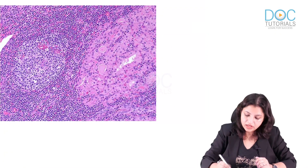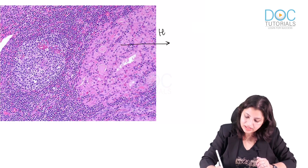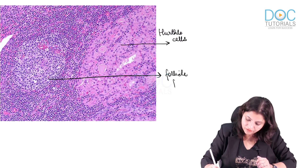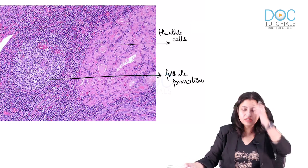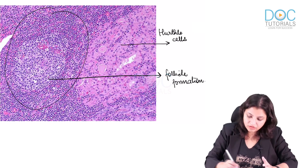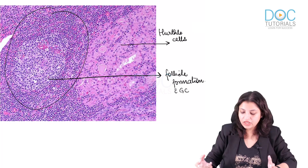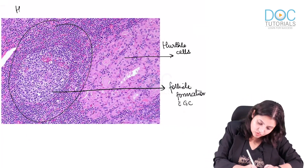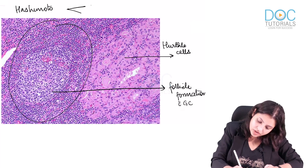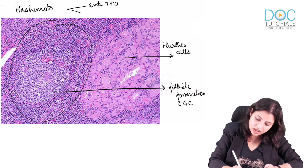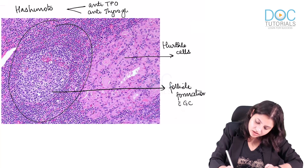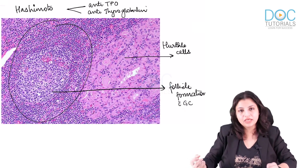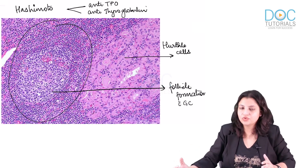In the thyroid, look at this image — it appeared in AIIMS 2016 exam. You can see a lot of pink-colored cells, which are Hürthle cells, along with follicle formation and a germinal center. This is typical of Hashimoto thyroiditis. Hashimoto is an autoimmune disease where the person has antithyroid peroxidase (anti-TPO) antibody or antithyroglobulin antibody, which cause injury to the cells and Hürthle cell change.